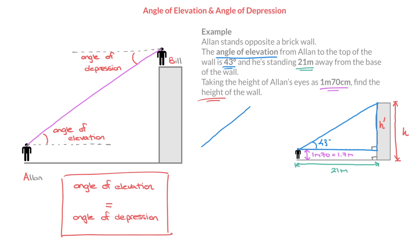I'll start by copying that blue triangle. It's a right-angle triangle. The interior angle here is 43 degrees. The length of the base is 21 meters. We need to find this side length, which I called h prime. Looking at this, it's a right-angle trigonometry problem. Relative to the interior angle of 43 degrees, we're looking for the opposite side length — that's O. And we have the 21-meter side length, which is the adjacent — that's A. To figure out which trigonometric ratio to use, we remind ourselves of SOH CAH TOA.